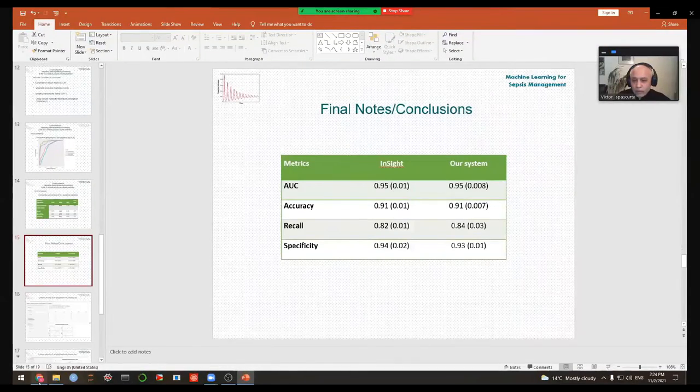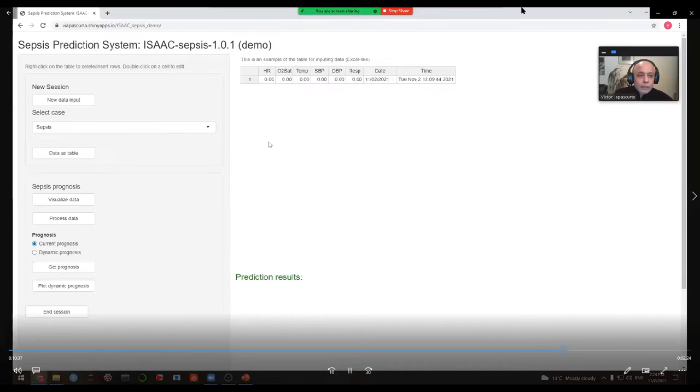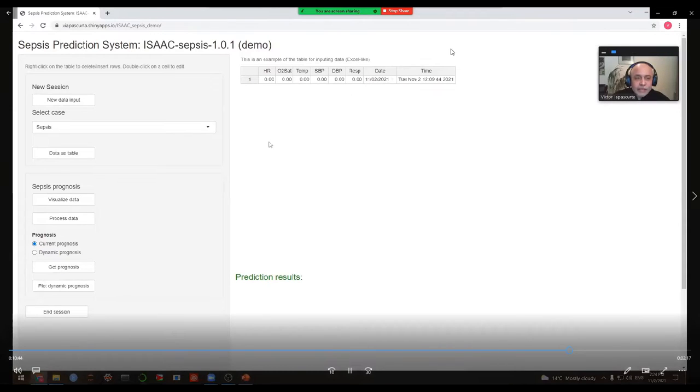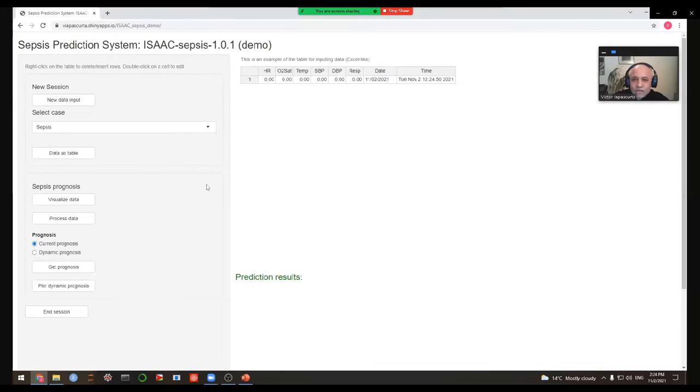And now I would like to switch to a demo application that exemplifies most of the aspects that I have presented so far. And here on the center of the screen, we have an Excel-like table, just a moment, where the doctor or the nurse can input the parameter values, for instance, heart rate 78, saturation 97, temperature 38, systolic blood pressure 115 mmHg, diastolic 76, respiratory 24, and collecting three such observations of six parameters values, we are able to ask the system to perform the prognosis.